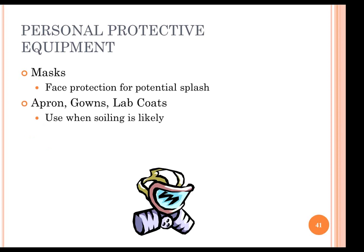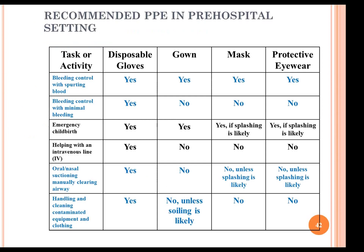Here is an overview of when to use PPE: for controlling spurting blood, use disposable gloves, gowns, masks, and protective eyewear. For minimal bleeding, gloves only are sufficient. If there is an emergency childbirth, use disposable gloves and gowns. For cleaning nasal secretions or airways, use gloves. For cleaning contaminated equipment, use gloves. If secretions are likely to splash, also use a gown.